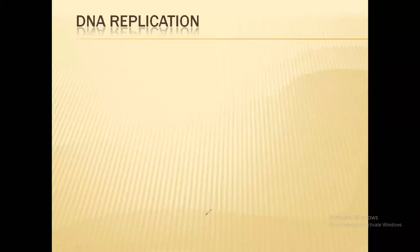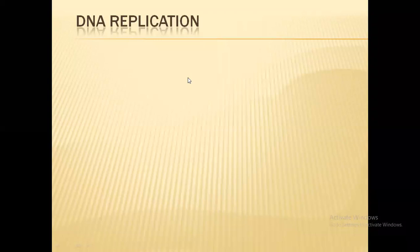Hello students and welcome to today's class. Today we will be discussing about this very specific topic which is DNA replication. Previously when we started this chapter, I told you about the process of central dogma where DNA is converted into mRNA, a process known as transcription. mRNA is converted into the respective protein, a process known as translation. At the same time, DNA can form its own copy, which we call DNA replication.